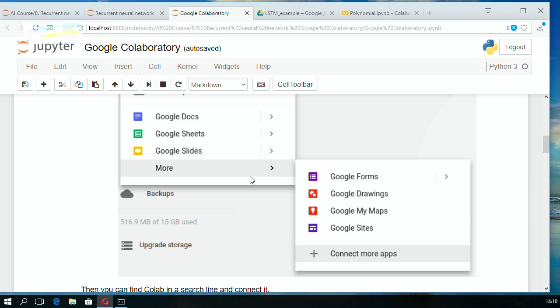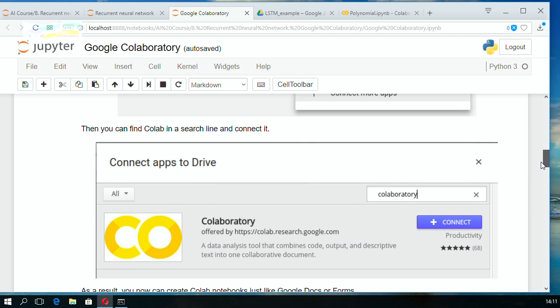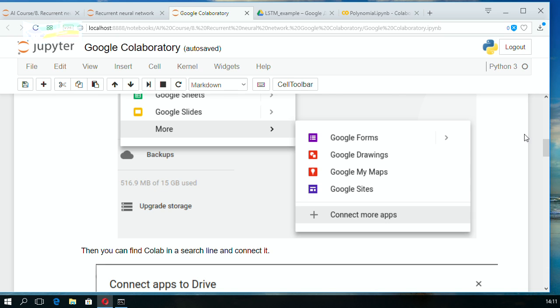You need to click create, more, and you can see Google Docs and Sheets. You need to connect more apps because Google Colab is not omnipresent. If you're a machine learning specialist, you need to connect it by clicking connect more apps.